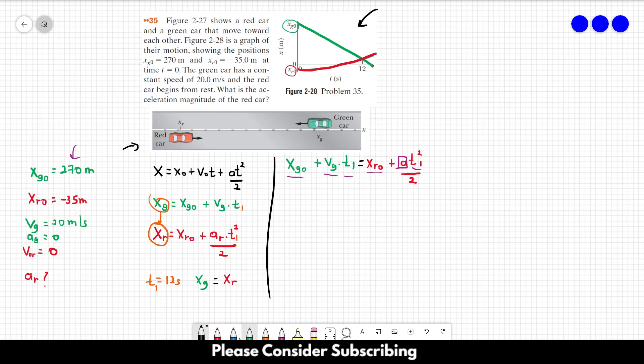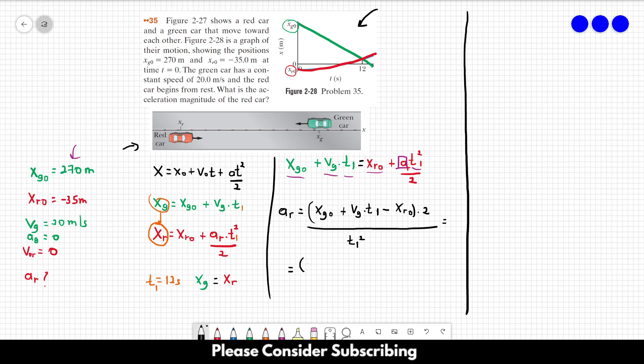So we just have to isolate AR. So AR is equal to XG0 plus VG times T1 minus XR0 times 2 over T1 squared. Let's replace the letters by the numbers. We will find XG0, which is 270 plus VG.